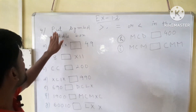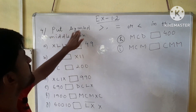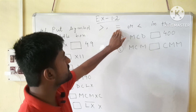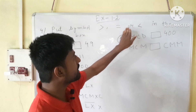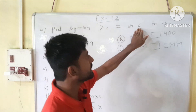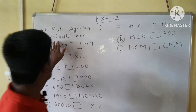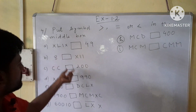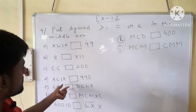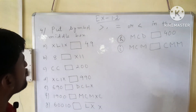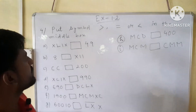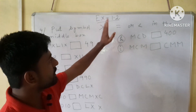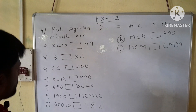Question number 4 says that put the symbol — greater than, less than, or equal — in the middle box. That means we have some boxes, and in these boxes we have to put either greater than, equal, or less than.